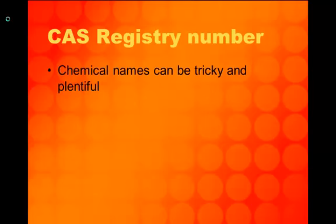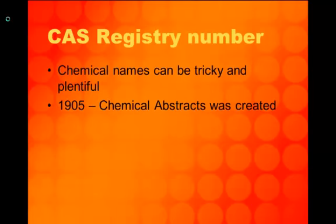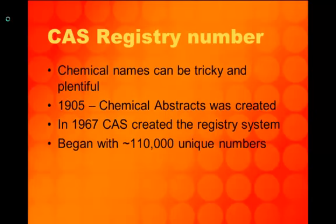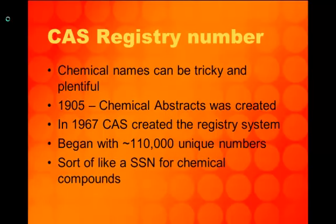In about 1905, a group of chemists got together and started indexing and abstracting all the chemical information that chemists were producing. They created what is now the largest database of information in the world: Chemical Abstracts. In 1967, they realized that with all the names a compound could have, they needed to create a system to easily find compounds — they created the CAS registry number system. That first year, they indexed over 110,000 unique compounds with unique numbers. These are kind of like social security numbers for chemical compounds.